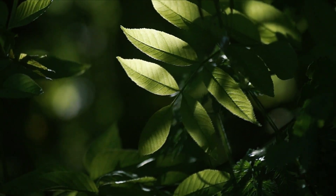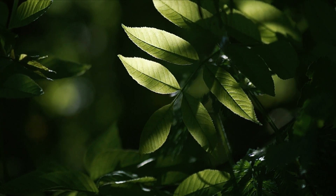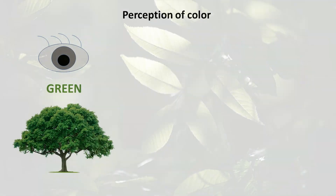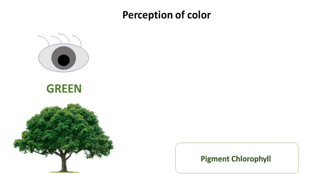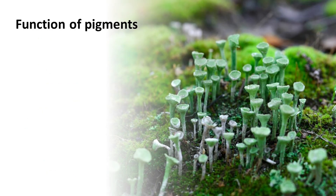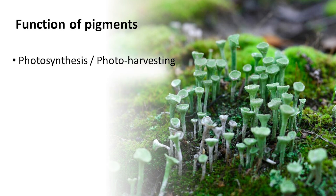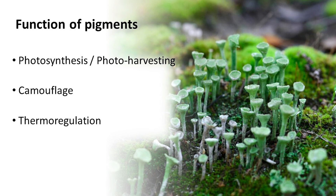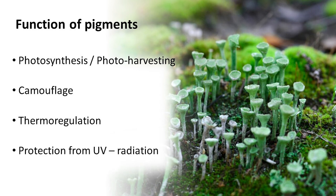A good example is the main pigment of plants, chlorophyll. We perceive plants as green because chlorophyll can absorb light in the red and blue spectra, reflecting green light instead. Pigments play important roles in various biological processes such as photosynthesis, camouflage, and thermoregulation. They also shield organisms from harmful ultraviolet radiation.